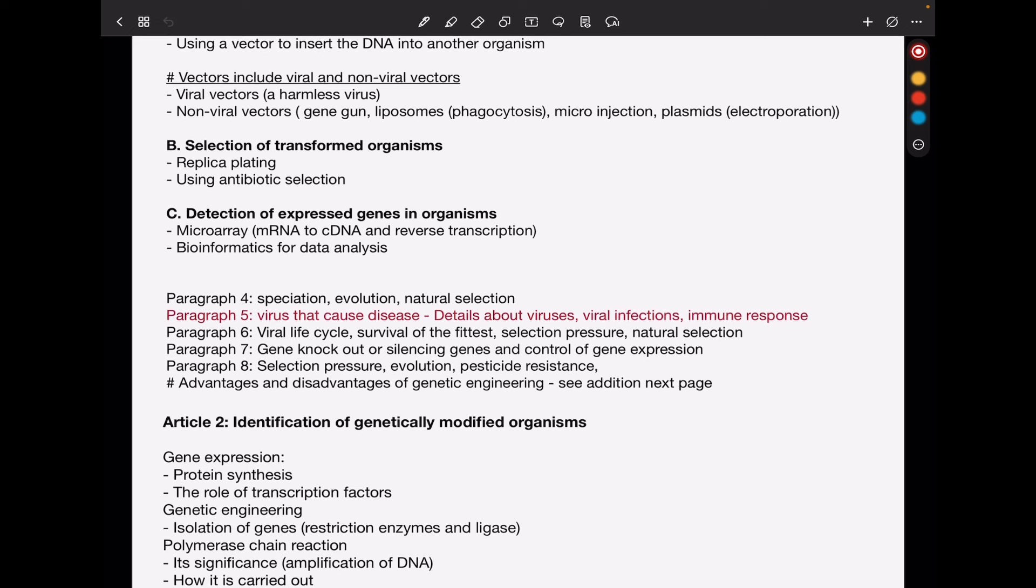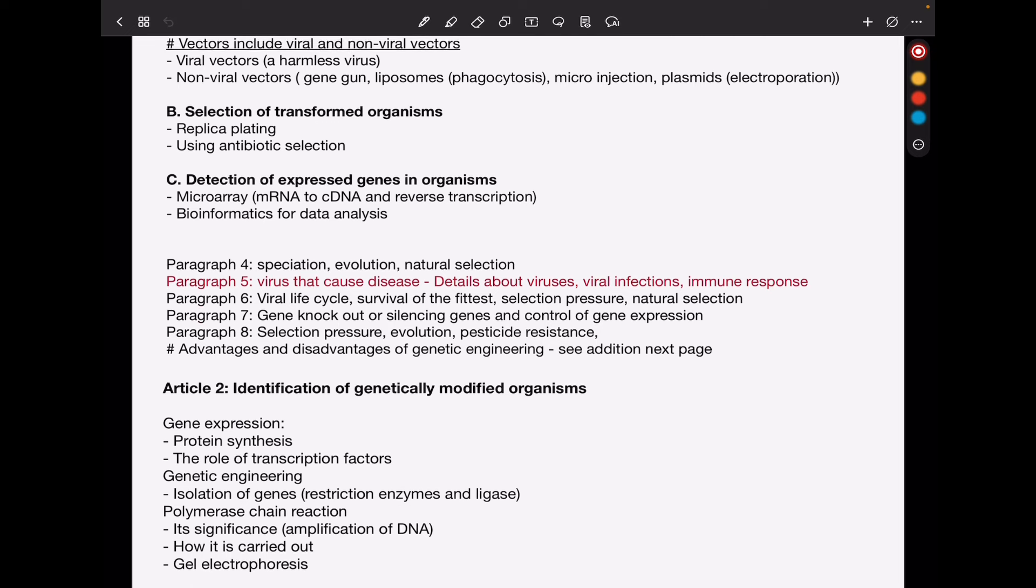Then the next part is about detection of expressed genes in organisms. Of course, if genes are expressed in a specific cell, messenger RNA is going to be produced. So in microarray, we talk about how that messenger RNA is converted into cDNA using reverse transcription, and then the cDNA can be used in microarray, followed by data analysis using bioinformatics. So you need to focus on that.